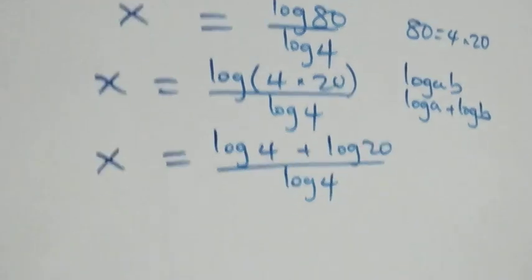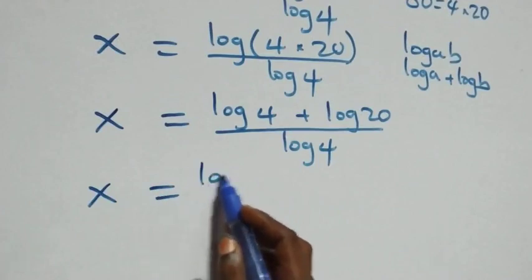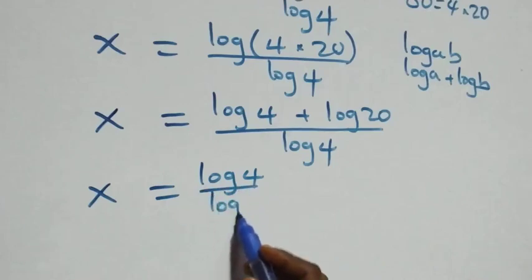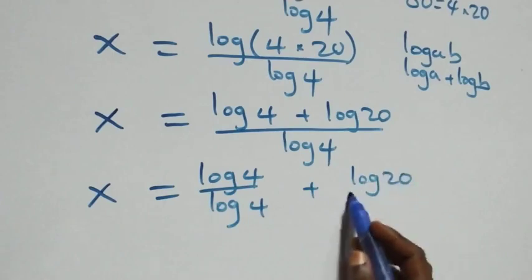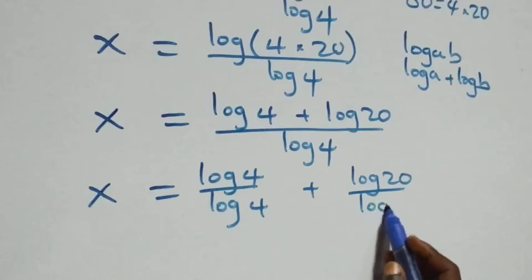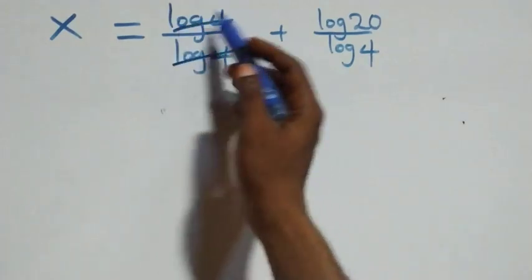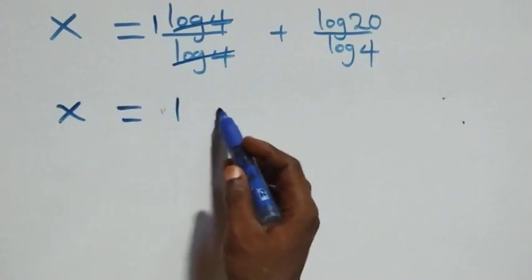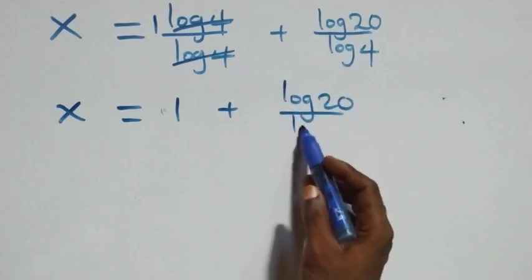We separate this into two fractions: x equals log four over log four plus log twenty over log four. Log four over log four cancels to one, leaving x equals one plus log twenty over log four.